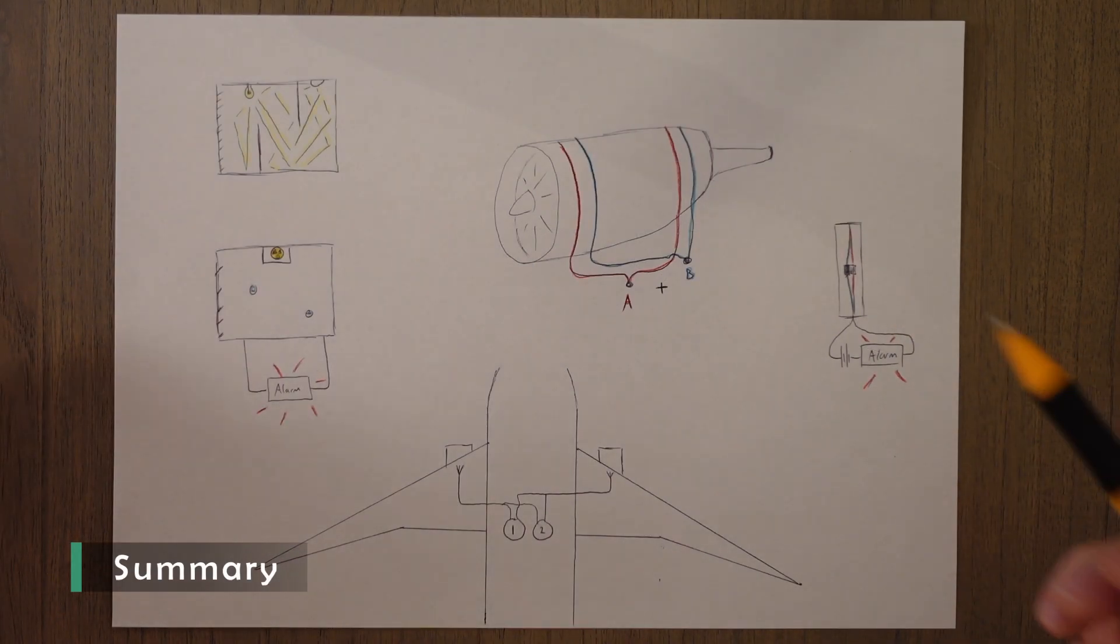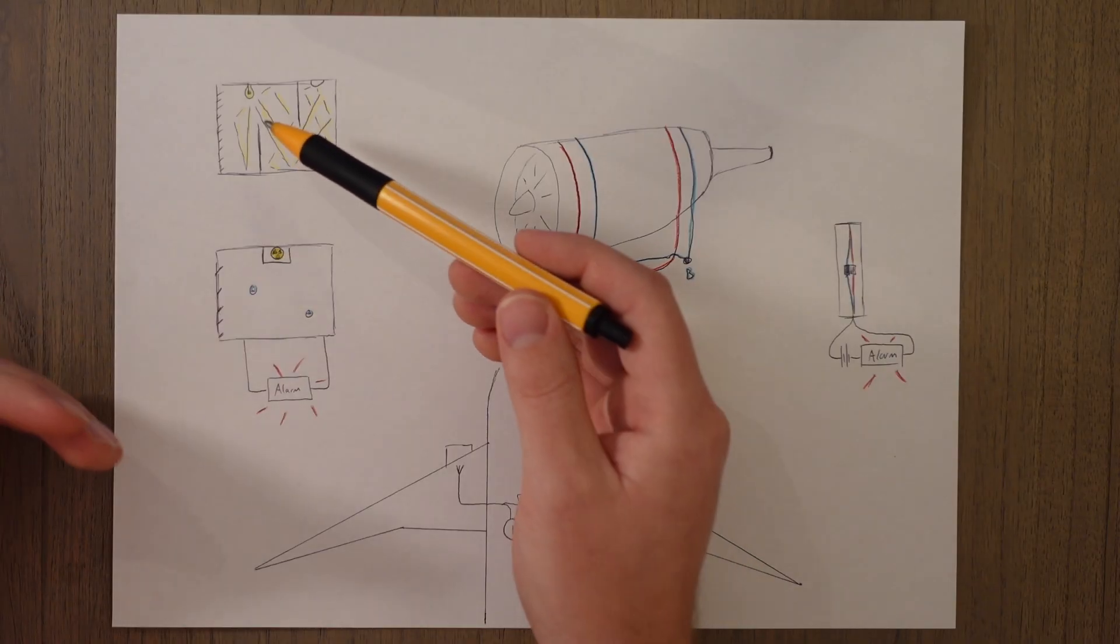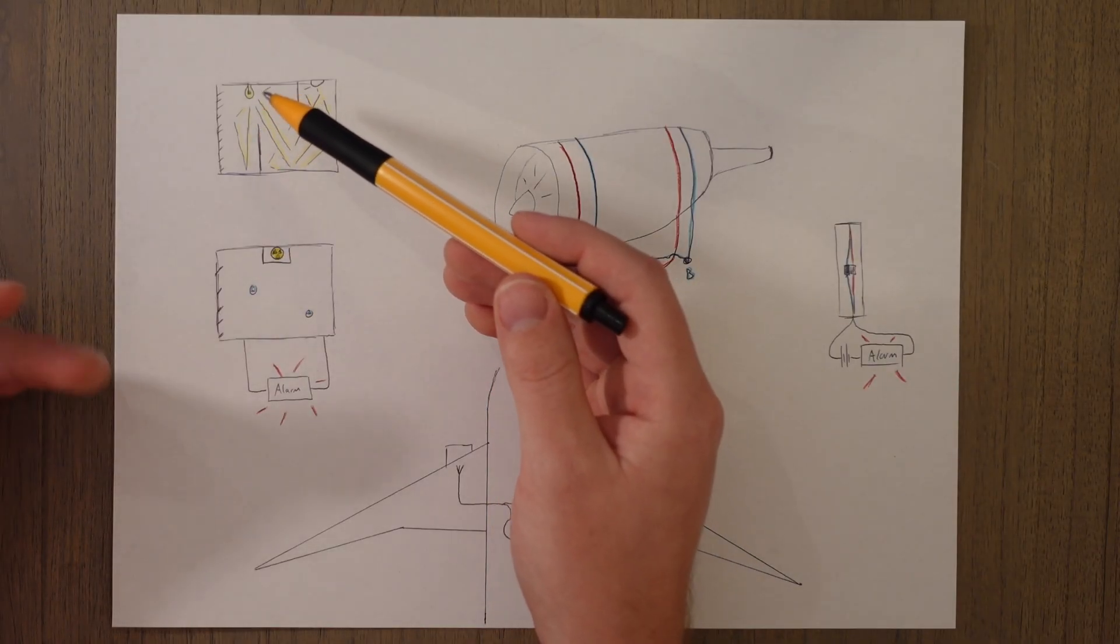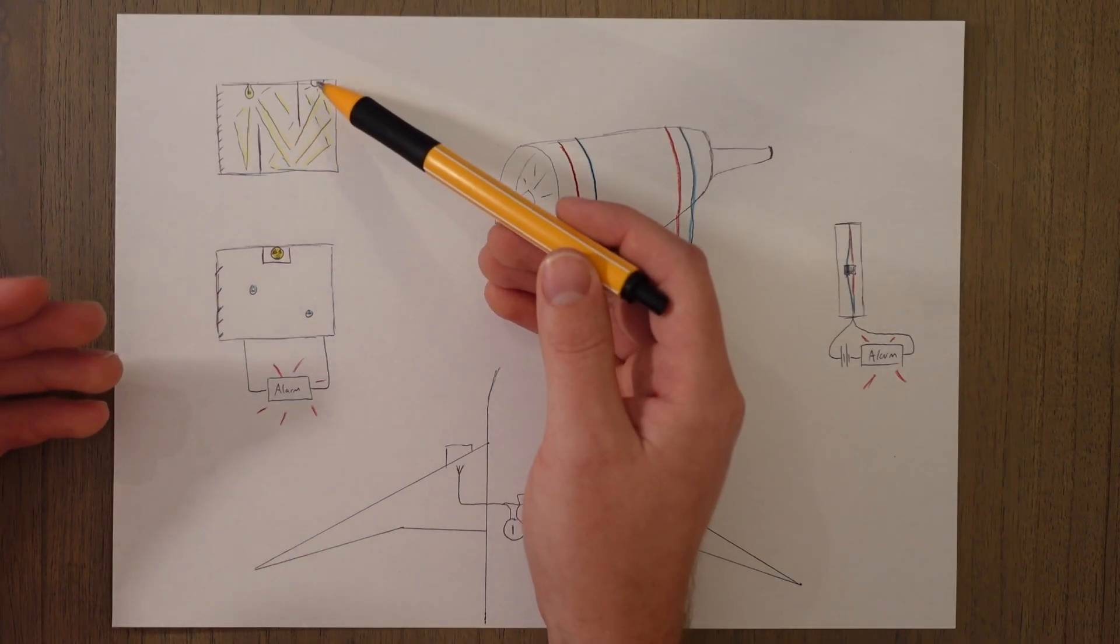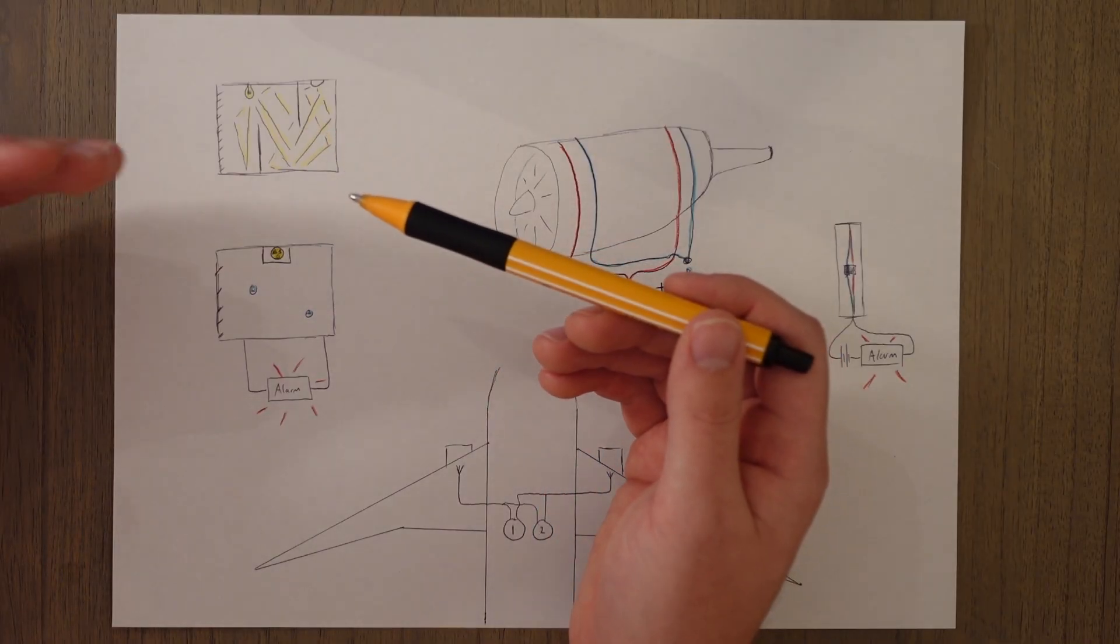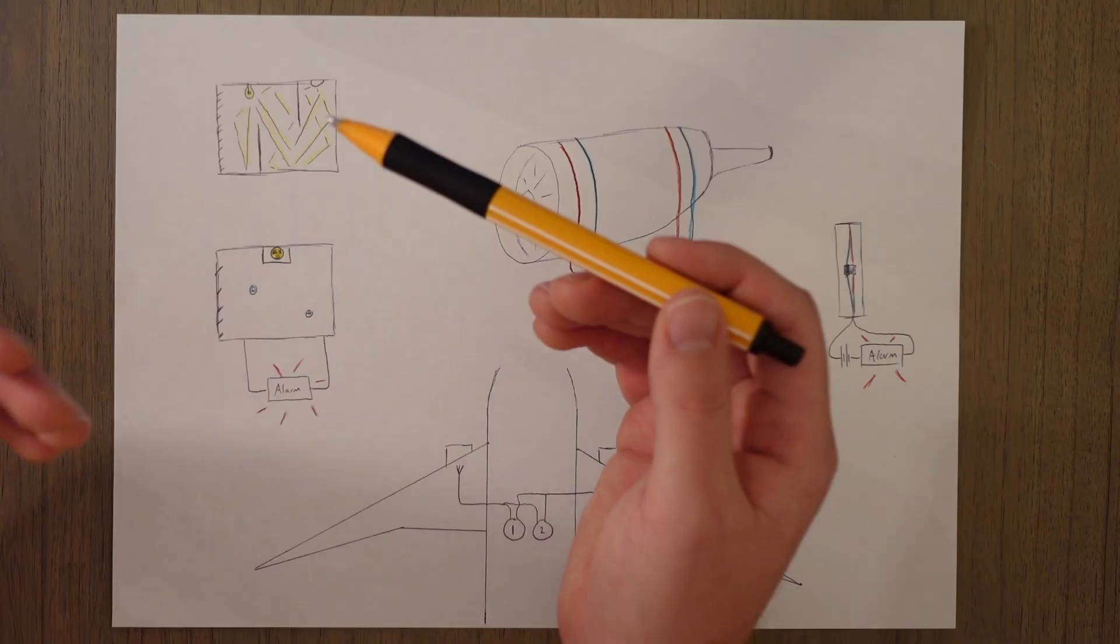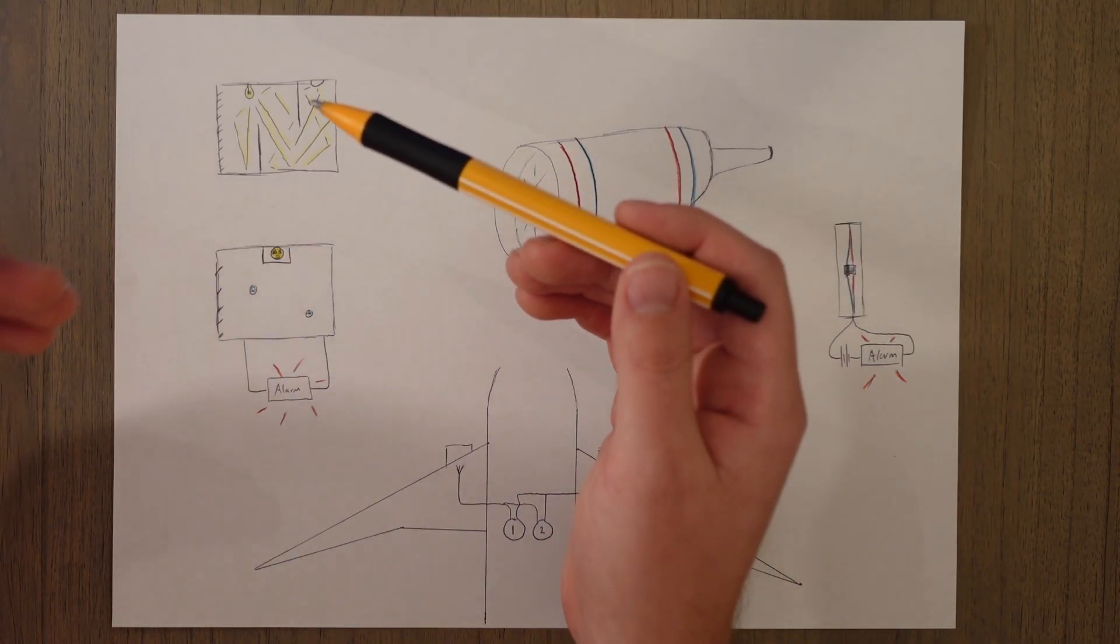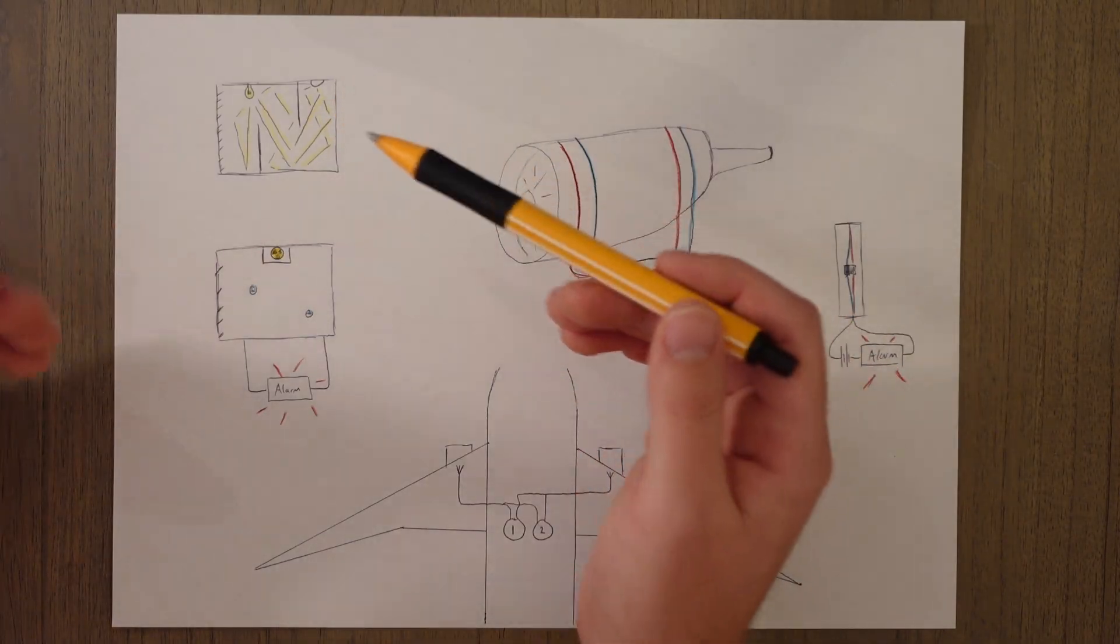To summarize, smoke detectors can be optical. In normal conditions the light in the optical sensor just bounces off the maze-like structure inside and doesn't reach the photoelectric cell. When there's smoke present the particles in the smoke reflect this light and the light reaches the photoelectric cell, and if the photoelectric cell has light on it it sounds an alarm in the cockpit.